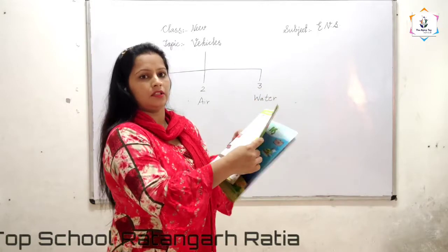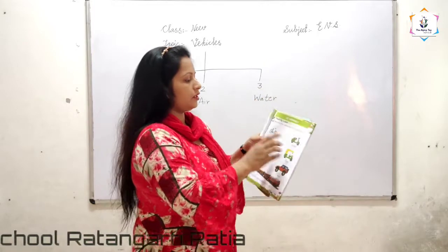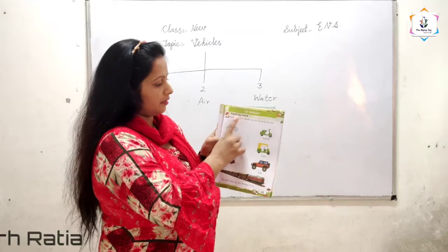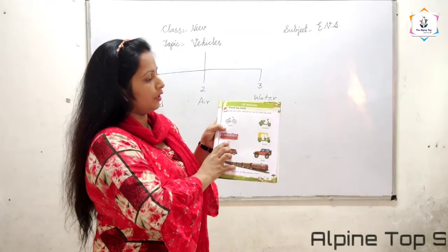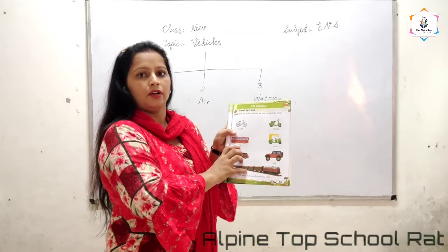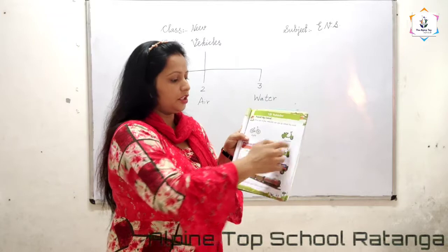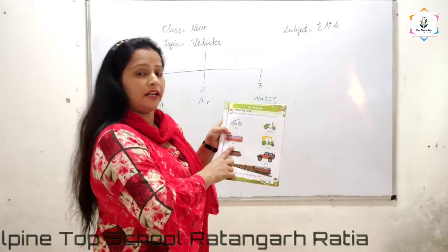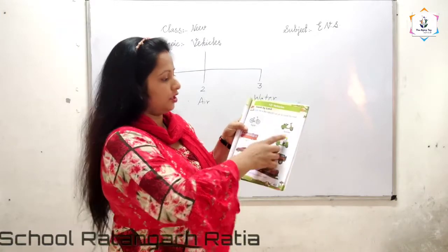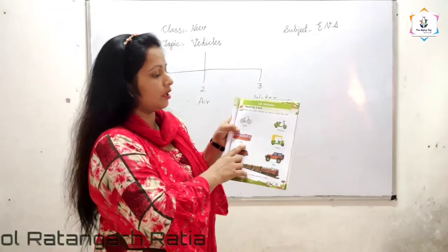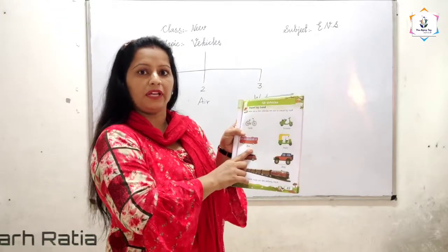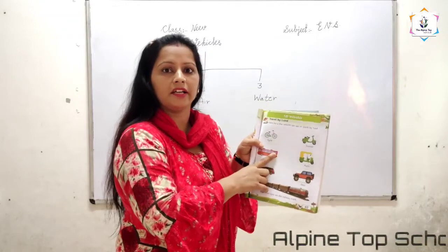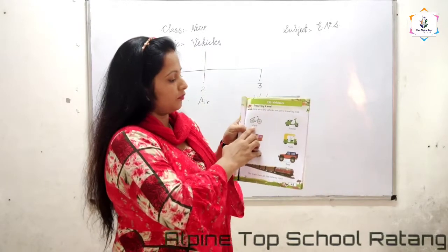Now we will learn the first type of vehicle: travel by land. Here are a few vehicles we use to travel by road. These vehicles are land vehicles. These vehicles run on the road. Road means Sadak. These vehicles run on the Sadak.